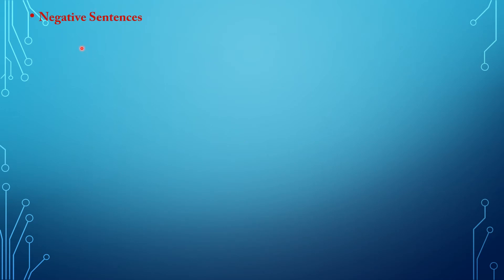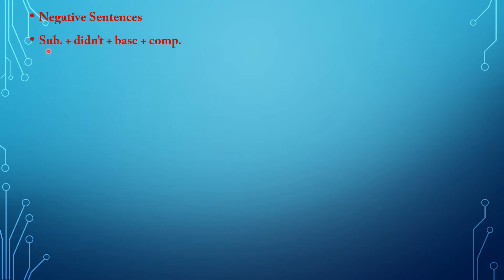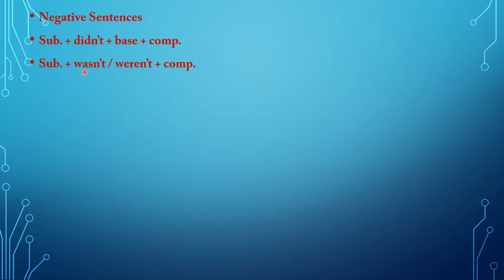Now we come to the second type of sentences, which is the negative sentences. Your negative sentence should begin by putting the subject, followed by the auxiliary did plus not, plus base verb, and the complement. Or your negative sentence should begin by putting the subject plus wasn't or weren't and the complement.